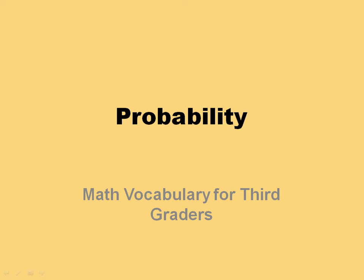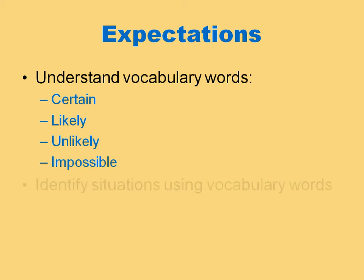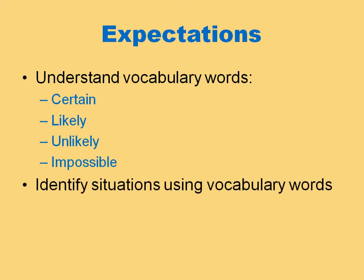This is a short lesson on probability. It focuses on a few vocabulary words associated with probability that are important for third graders to know. By the end of this lesson you will understand the vocabulary words certain, likely, unlikely, and impossible, and you will also be able to identify situations using those vocabulary words.